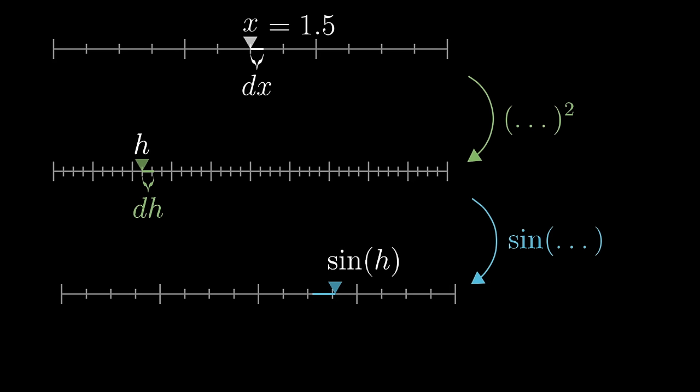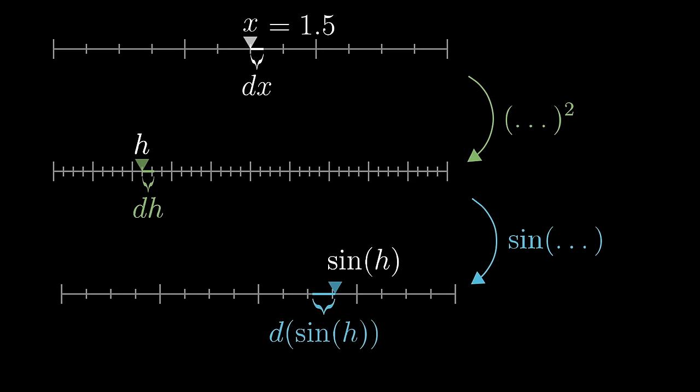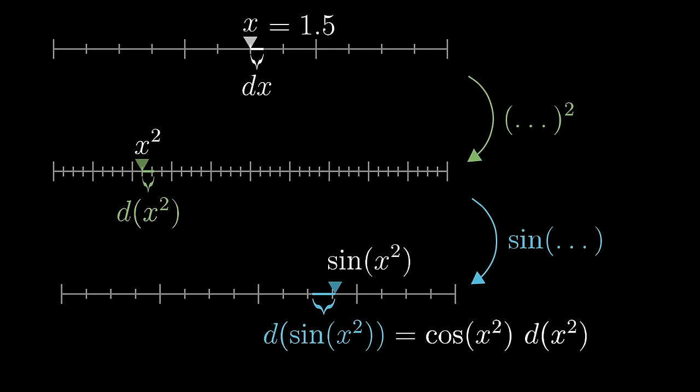Remember in our three line setup, when we took the derivative of the sine on that bottom, we expanded the size of that nudge d sine as cosine of h times dh. This was because we didn't immediately know how the size of that bottom nudge depended on x—that's kind of the whole thing we were trying to figure out. But we could take the derivative with respect to that intermediate variable h, that is, figure out how to express the size of that nudge on the third line as some multiple of dh, the size of the nudge on the second line. And it was only after that that we unfolded further by figuring out what dh was.